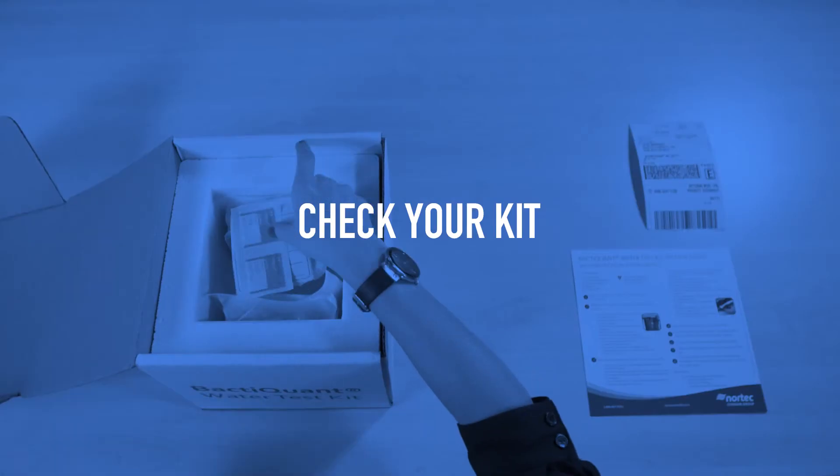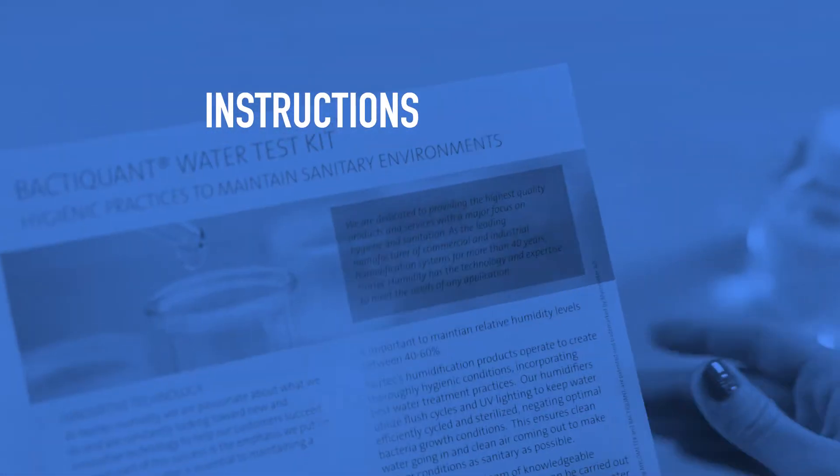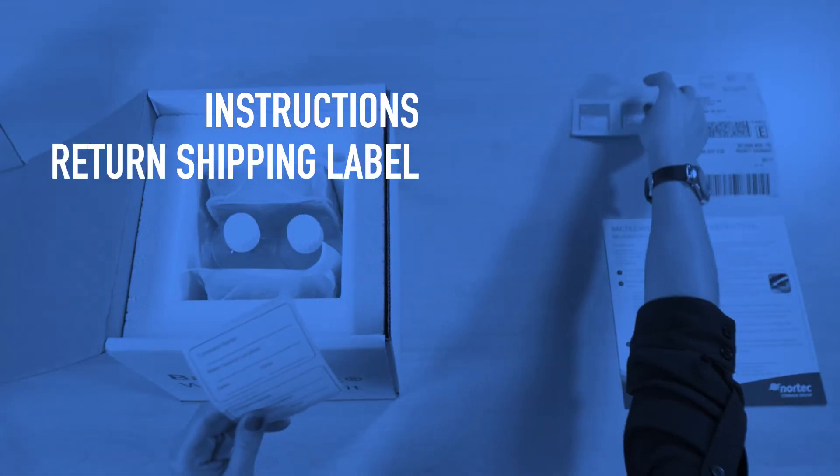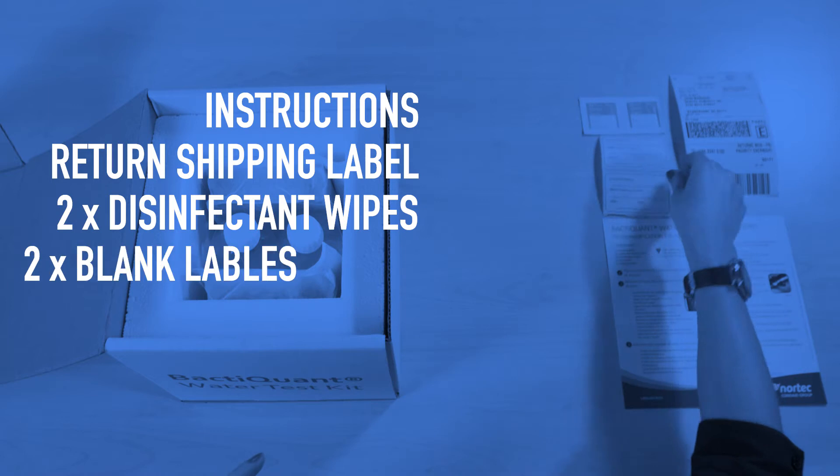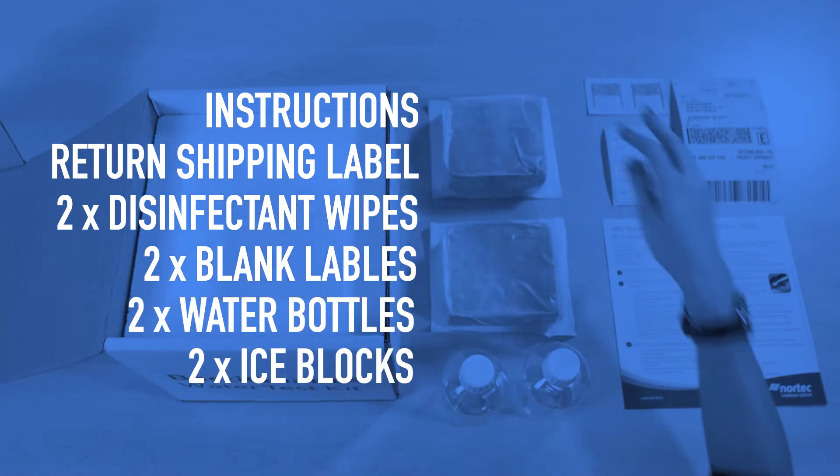Once you receive your test kit, confirm you have all the components. Each kit includes instructions, one return shipping label, two disinfectant wipes, two blank labels, two sterile water bottles, and two ice blocks.